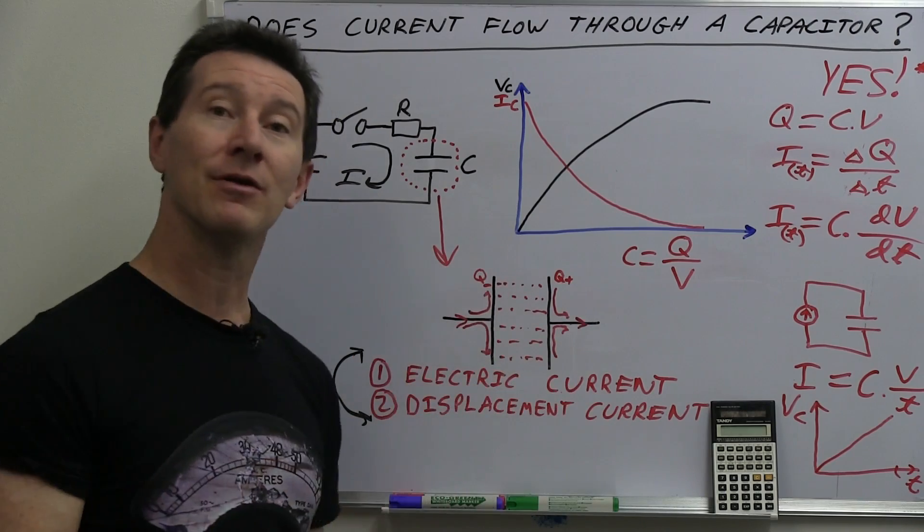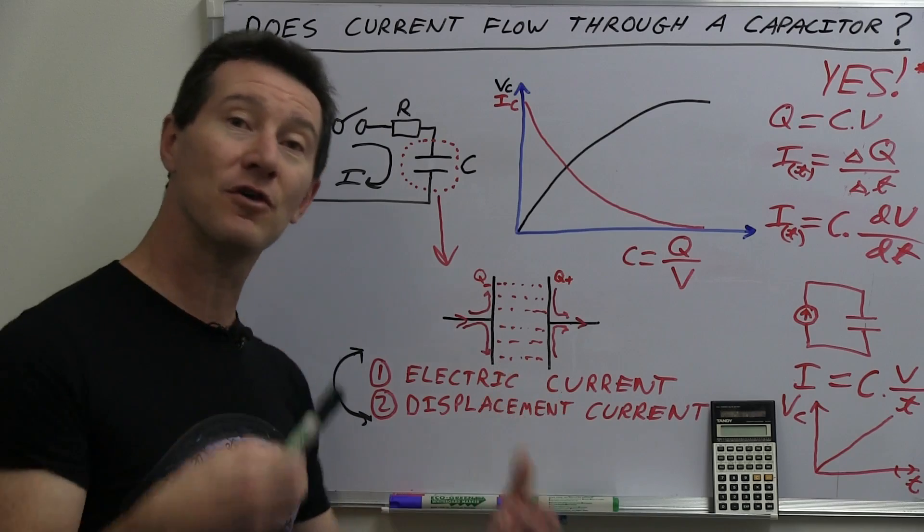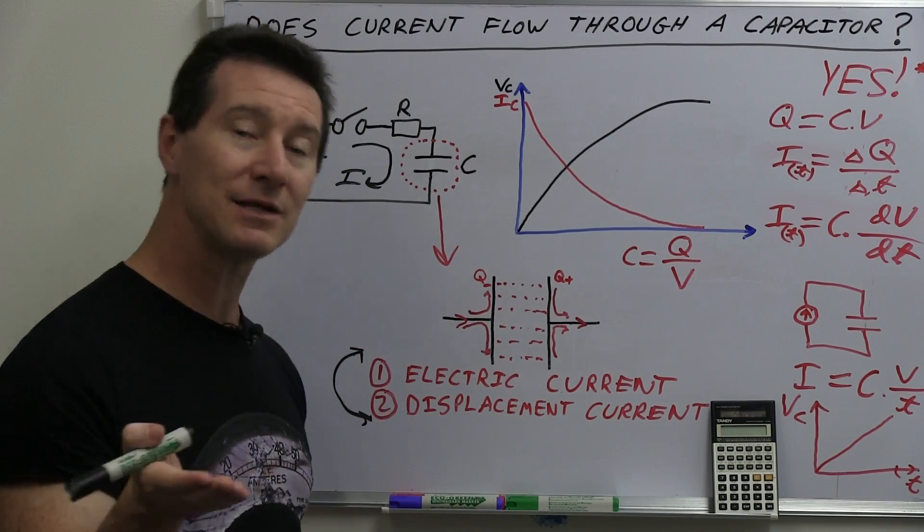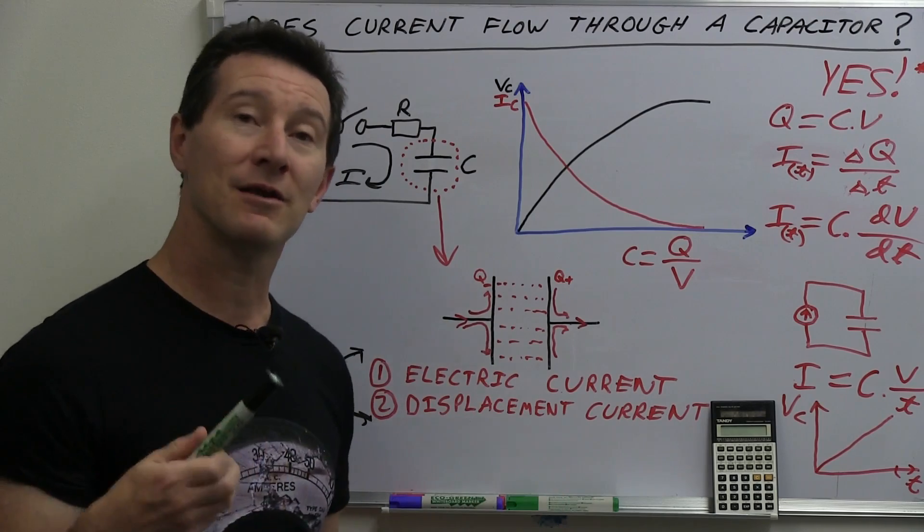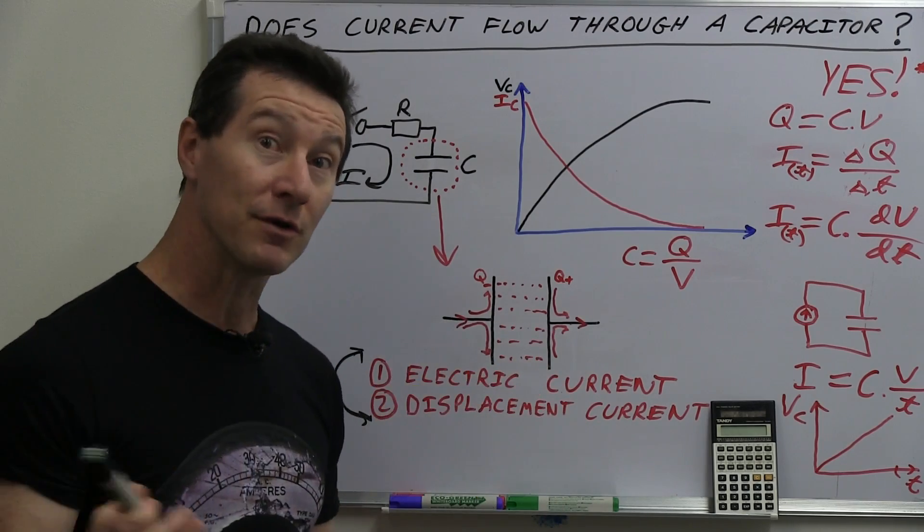In this case, capacitors, as the rate of change of the electric field goes up, the greater the current that can flow through this thing. And conversely, with inductors, then the greater the change of the magnetic field, the less current flows through it.